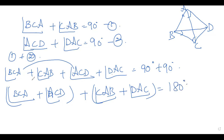So angle B, C, D plus angle D, A, B equals 180 degrees. These are opposite angles of the quadrilateral ABCD. Angle B plus angle D is also given as 90 plus 90 equals 180 degrees.